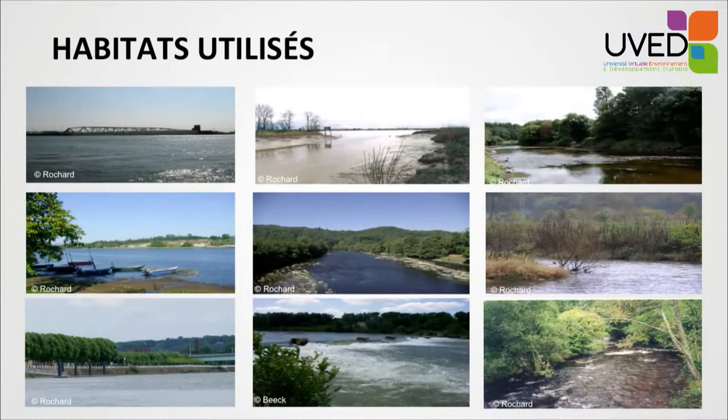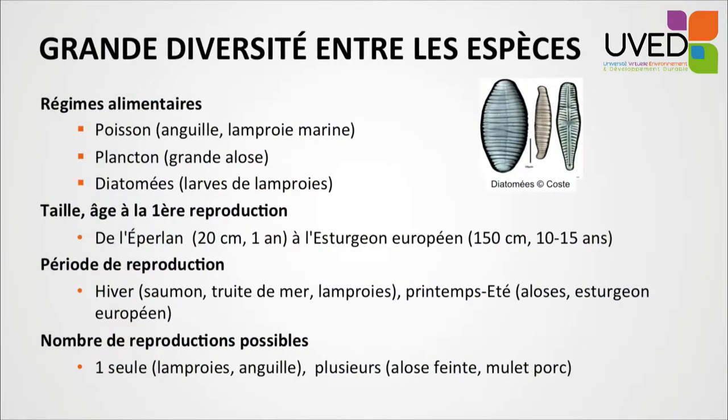These species reproduce in the sea and are called thalassodrome. There are only three species in Europe. This diversity in the life cycle also corresponds to different types of habitat being used: the lower part of large or small estuaries, the average part of rivers, and the very small rivers or torrents in the mountains. Different habitats are used by these species at given stages of their life cycle.